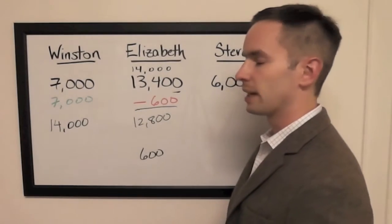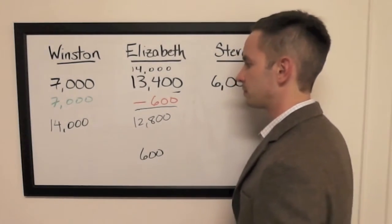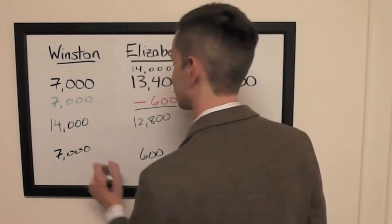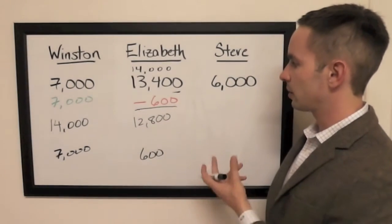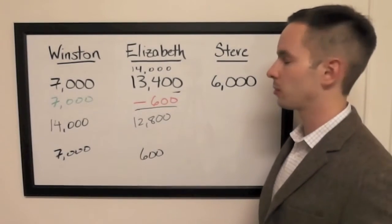That's more than Winston has right now. He needs to get it right to have a chance, so he might as well just wager everything. And you'll see also that Steve can only get up to 12,000, so he cannot catch Elizabeth provided that she wagers appropriately.